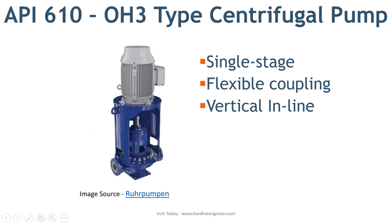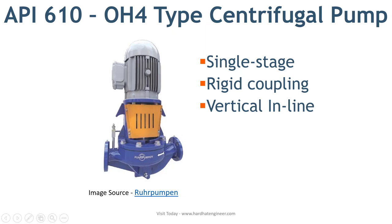The next is OH4 type pump. The only difference between OH3 and OH4 is the use of rigid coupling in OH4, as compared to flexible coupling in OH3. In OH4, the pump and motor are directly and rigidly connected, whereas in OH3 a flexible coupling is used.